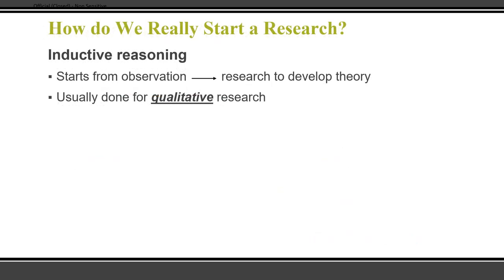For inductive reasoning, we start from an observation, do research, and then come to a general theory. If you remember, in deductive reasoning you start from a theory and end with a specific conclusion. Here you start with an observation and then come to a general theory. Inductive reasoning is usually done for qualitative research.